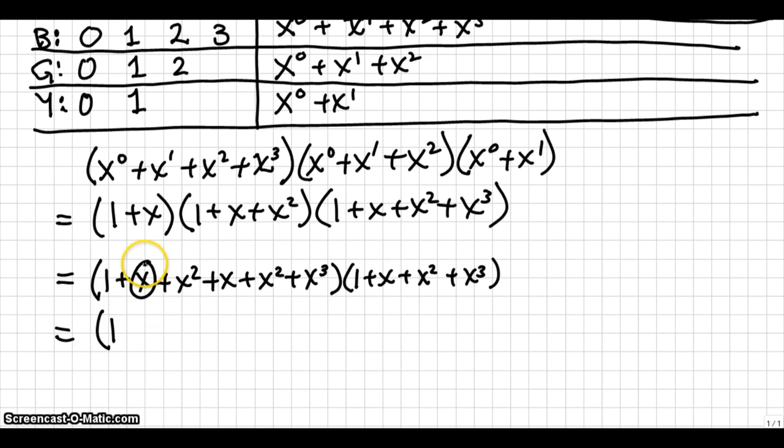So, let's just gather like terms. We have 1 plus, looks like we have 2x's here for 2x. We have 2x squared as well. So, that gives us 2x squared. And we have 1x cubed term. Okay, that takes care of the first factor. And then we copy down the second factor again. And next,